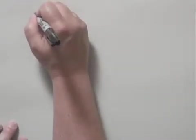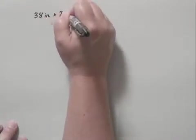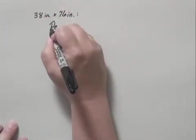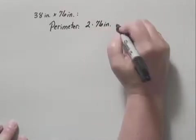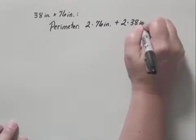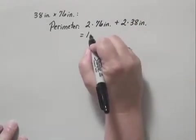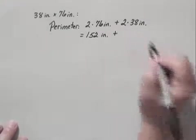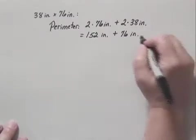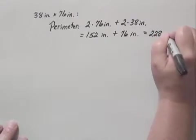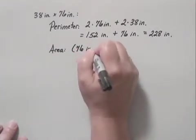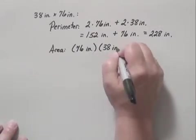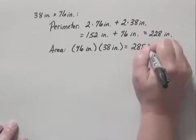Then we repeat this one more time for the third table. The dimensions were 38 inches by 76 inches. The perimeter was 2 times 76 inches plus 2 times 38 inches. That is 152 inches plus 76 inches, which gives us a perimeter of 228 inches. And finally, the area of the third table is 76 inches times 38 inches, which gives us 2,888 square inches.